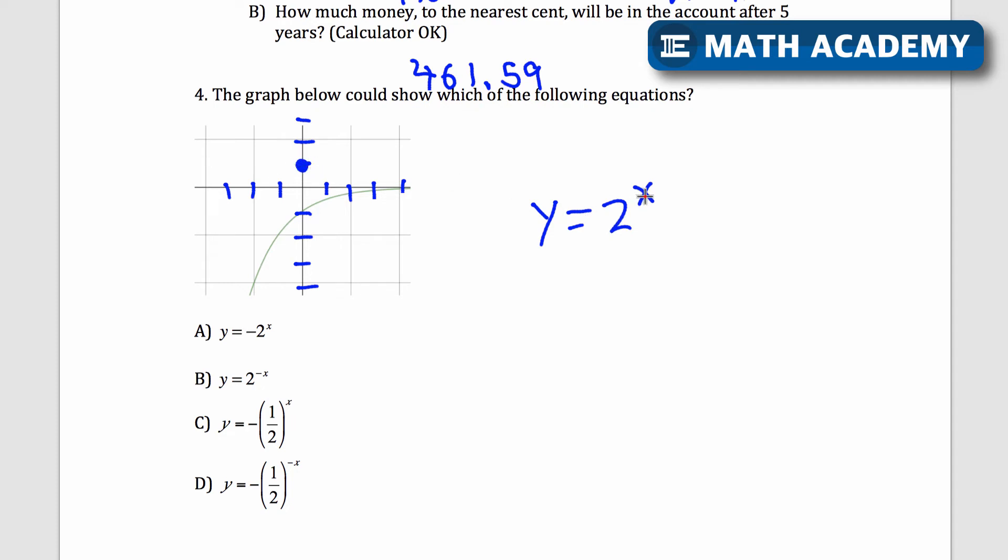If I plug in 1, 2 to the power of 1 is 2. So I go over 1 and my height doubles. If I plug in 2, y equals 2 to the power of 2. That would be 4. So 2, 4, that's going to be 2, 3, 4, way up here. Every time I'm going to the right, I'm doubling. I'm going to multiply by 2 one more time. 2 to the power of 3 is 8. So that's like way up here. So it's going like this.